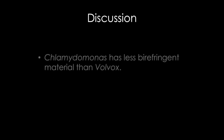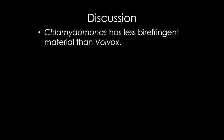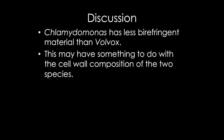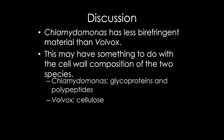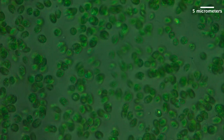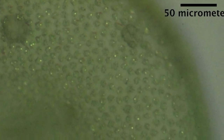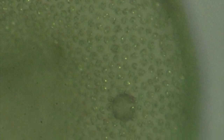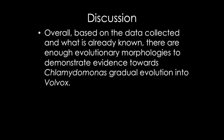Chlamydomonas has less birefringent material than Volvox, which may have something to do with the cell wall composition of the two species. Chlamydomonas has a cell wall made of glycoproteins and polypeptides, while Volvox has a cell wall made of cellulose. Another interesting detail is that in both algae species, the crystals are salt-based and located in a layer of protein complexes known as W6. The composition of this layer varies between the algae species and controls how much birefringence is exhibited. Overall, based on the data collected and what is already known, there are enough evolutionary morphologies to demonstrate evidence towards Chlamydomonas' gradual evolution into Volvox, thus supporting the original hypothesis.